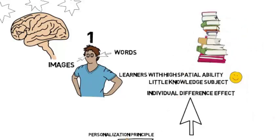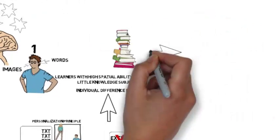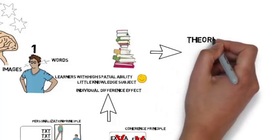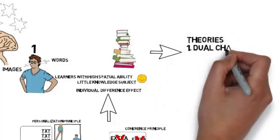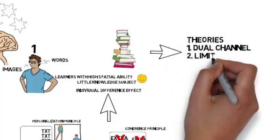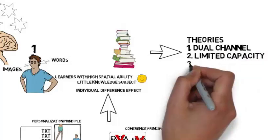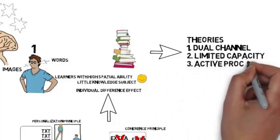There are three theories behind these principles. First, the dual channel. Second, the limited capacity. Third, the active processing assumption.